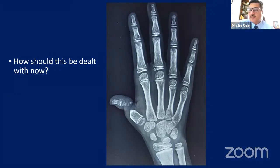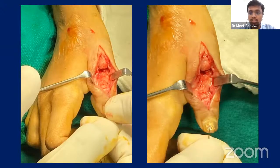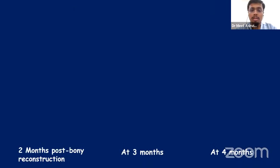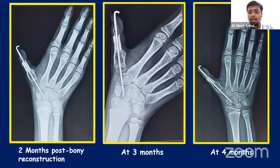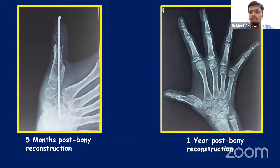We exposed the gap non-union site and used a fibular strut graft fixed with a K-wire. At two months this was the X-ray, and in subsequent follow-ups, the fibular graft was taking up well at five months — it had almost regained the image of surrounding bone. That was when we decided to remove the K-wire, and this was our result at one year post-reconstruction.